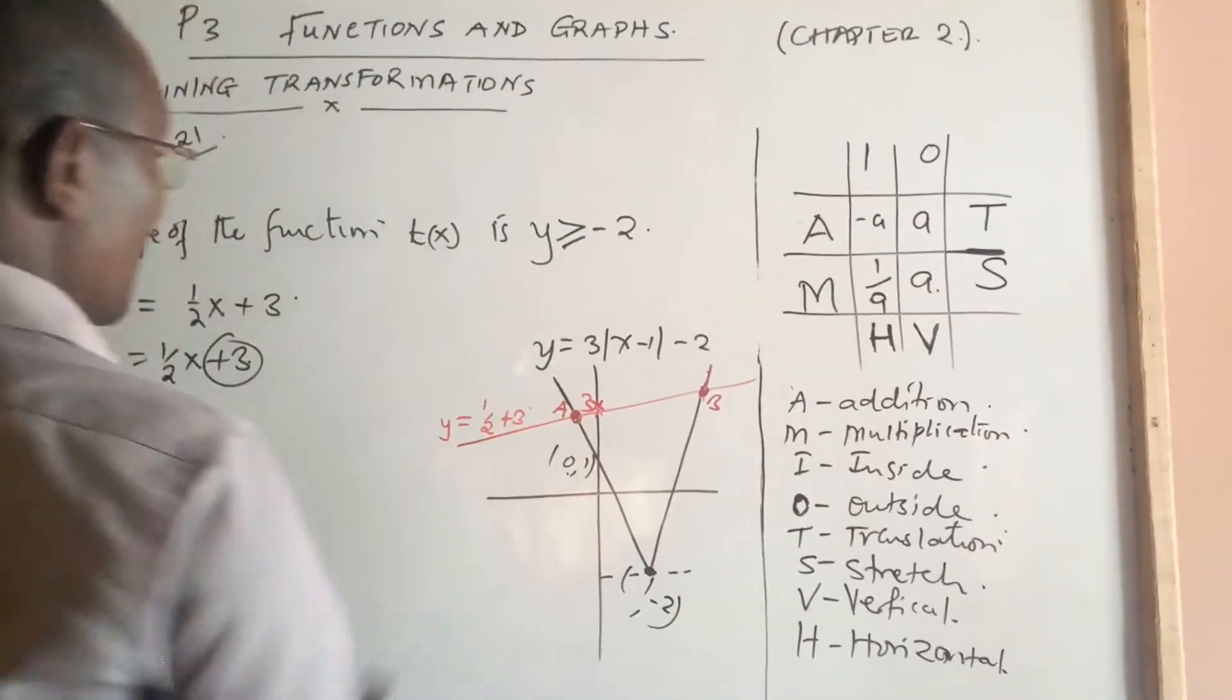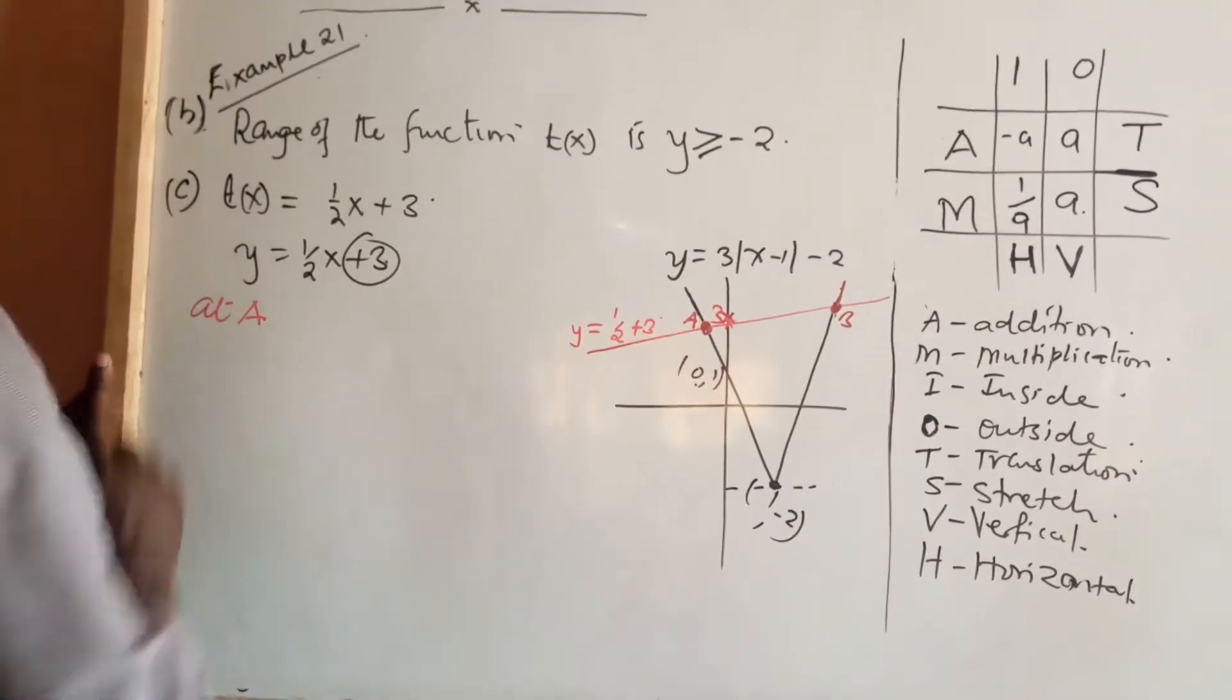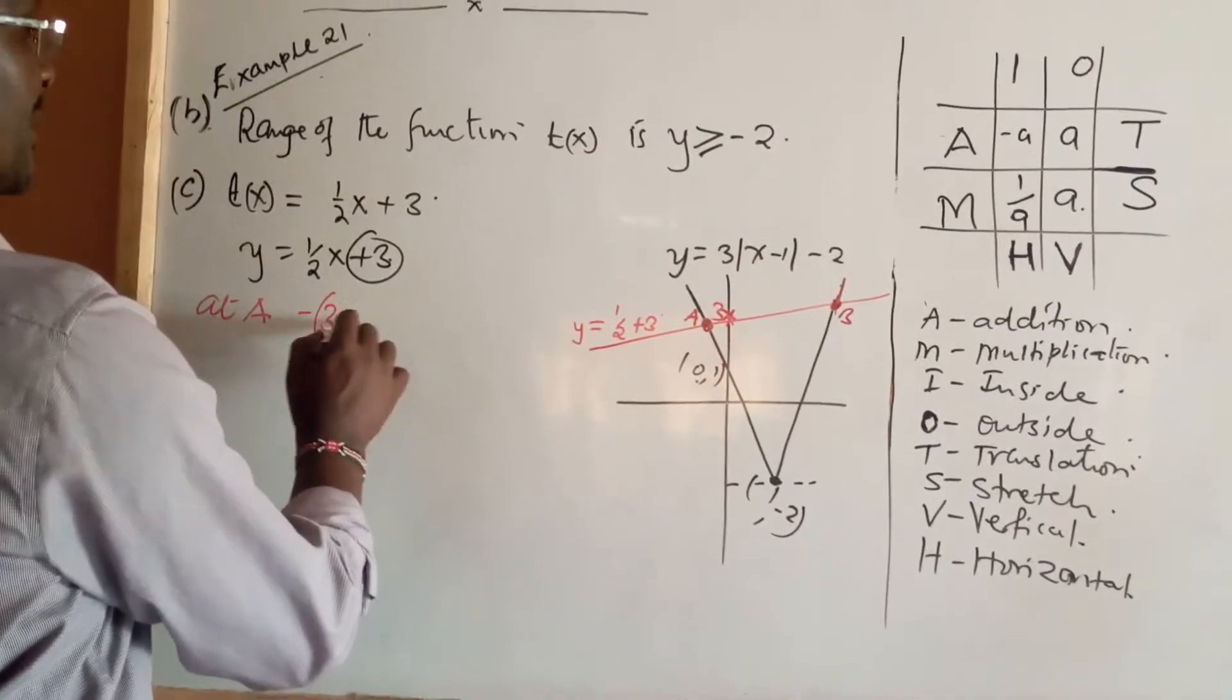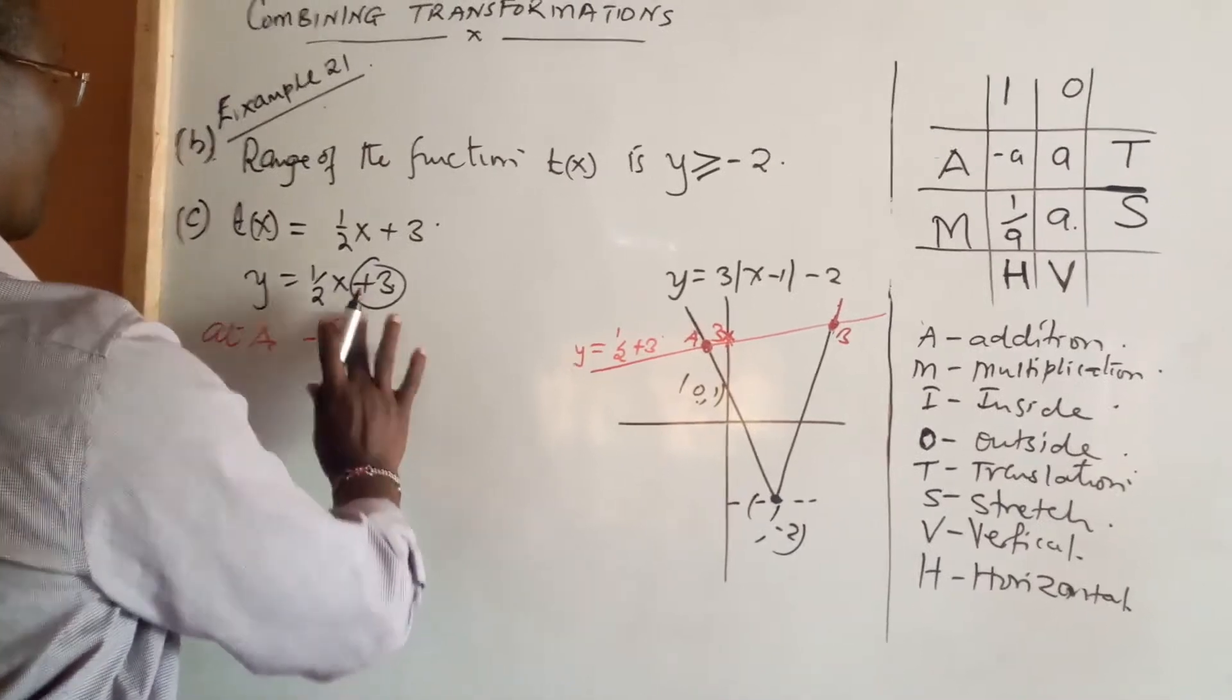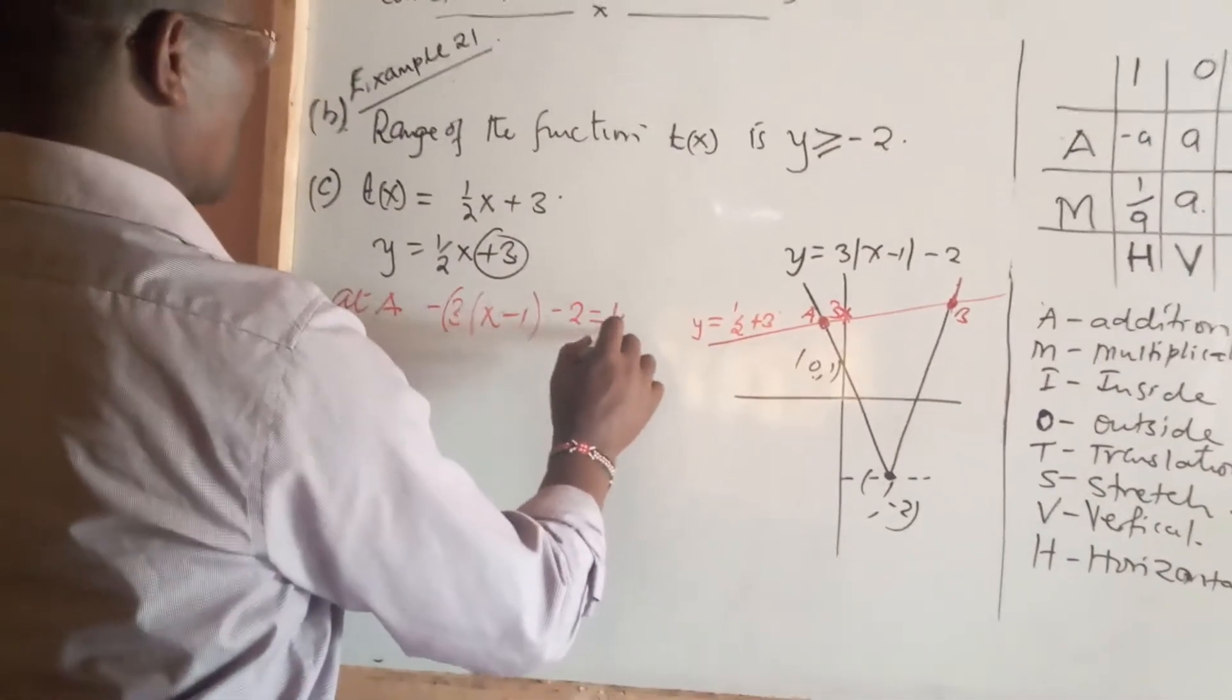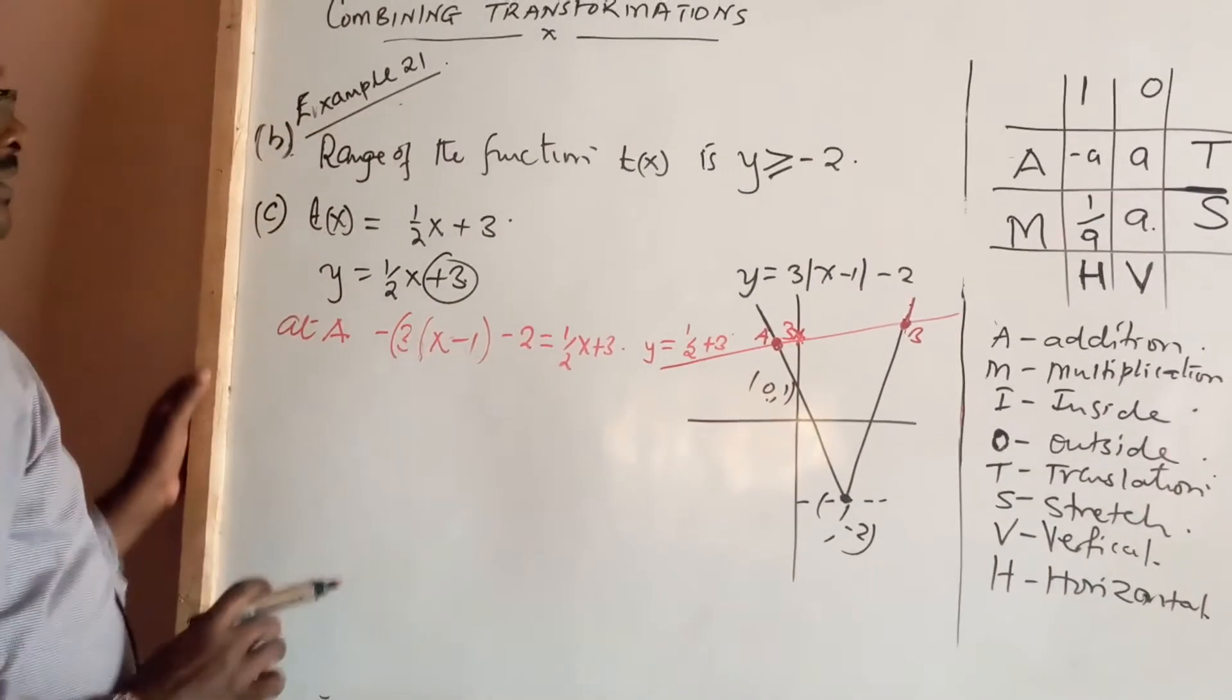Point A is actually the moduled part. So we would want to say, at point A, the moduled part which is supposed to be originally negative, -3(x-1) - 2, is supposed to equal (1/2)x + 3. The moduled part, which is supposed to be negative originally.